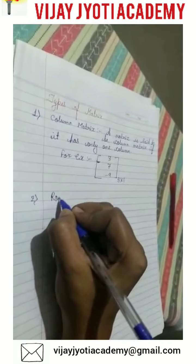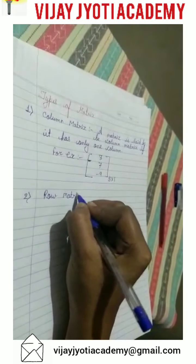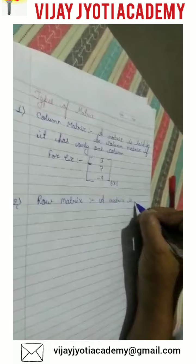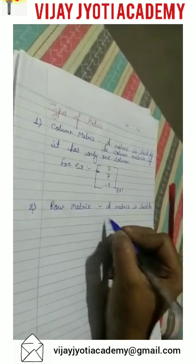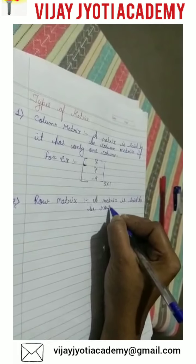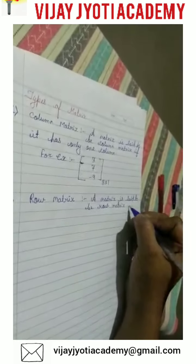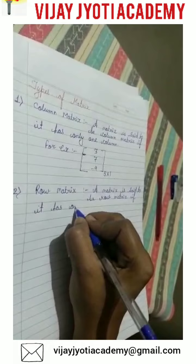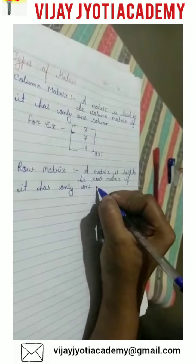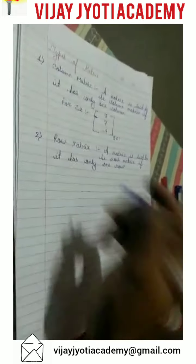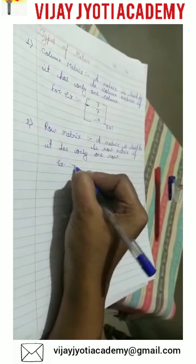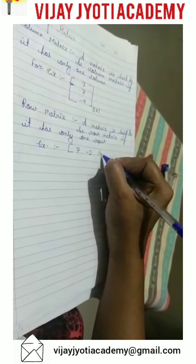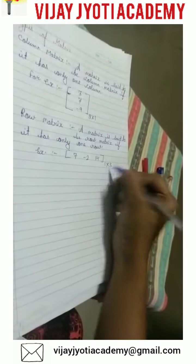The second type of matrix is row matrix. A matrix is said to be a row matrix if it has only one row. An example is the matrix with elements 7, minus 2, and 40, which is a 1 by 3 matrix.